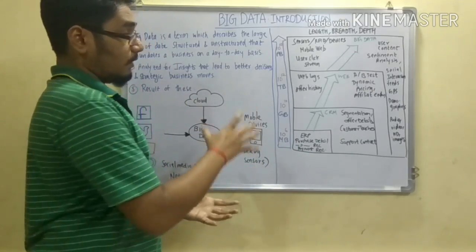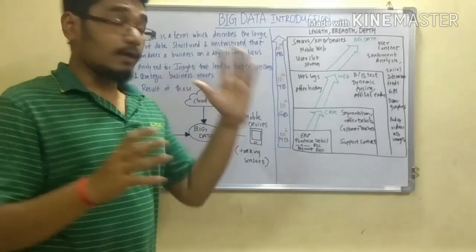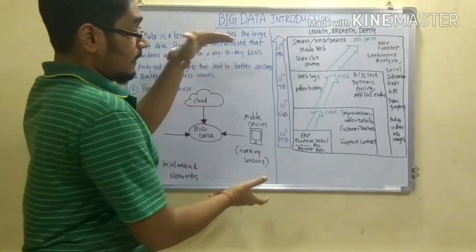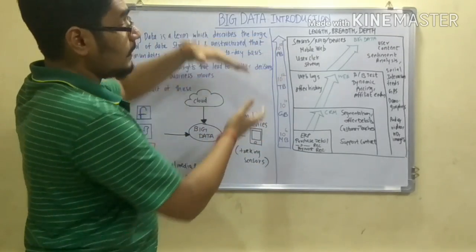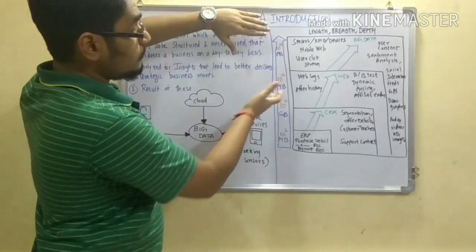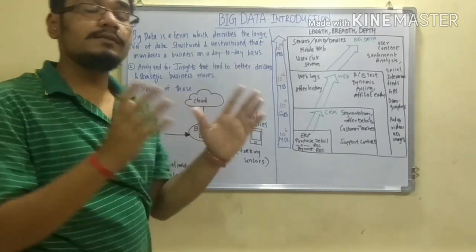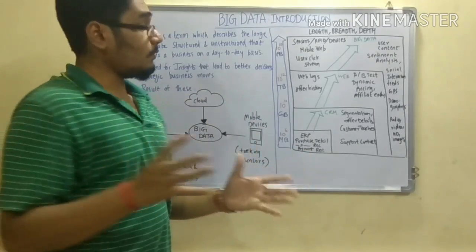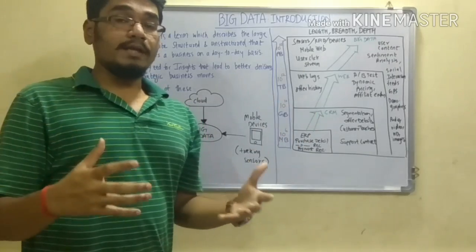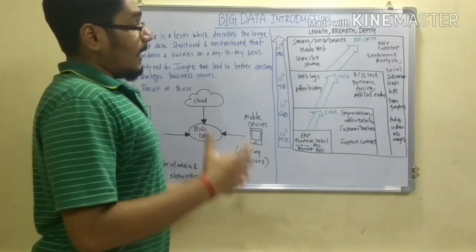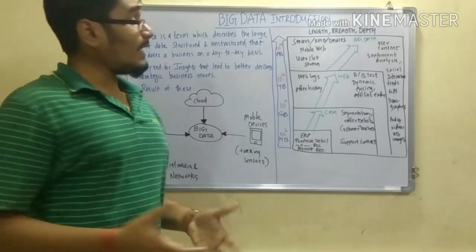So as we move up the chain, from megabytes to gigabytes to terabytes, we reach petabytes — 10 to the power of 15. This is the ultimate scale of data, and this is what constitutes big data.